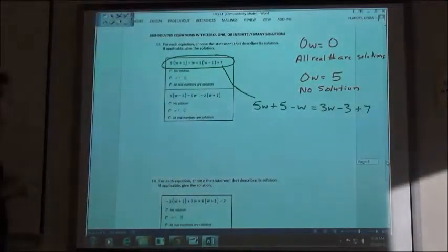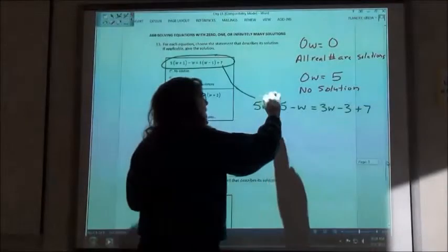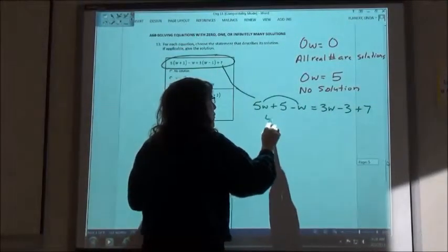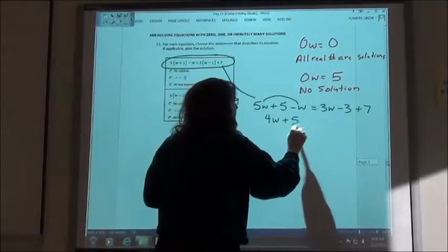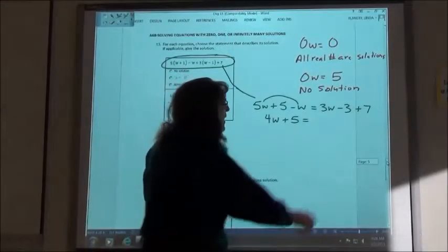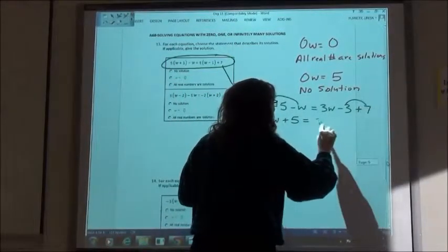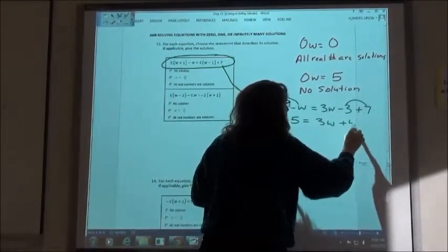So combining my like terms, 5w minus w is 4w plus 5. On the other side, combining my like terms, I'm going to have a 3w plus 4, right?